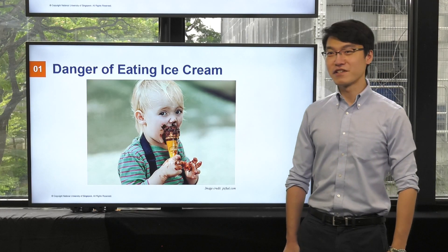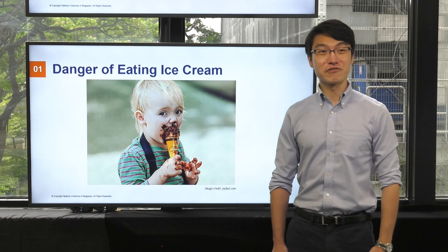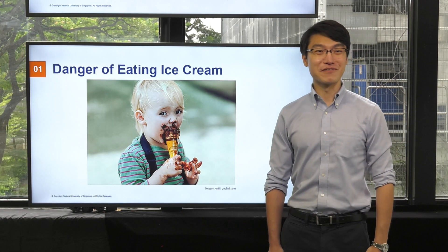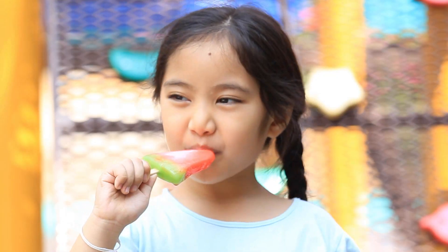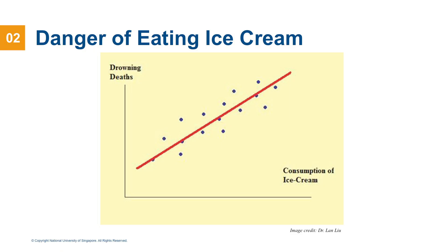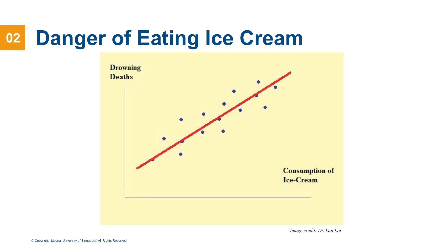I will begin with a very interesting example, which is the danger of eating ice cream. This is a scatter plot, a hypothetical scenario, where on the y-axis we have the number of drowning deaths, and the x-axis is the consumption of ice cream.